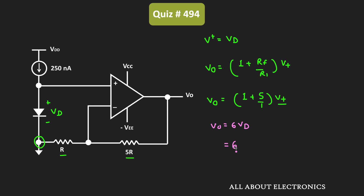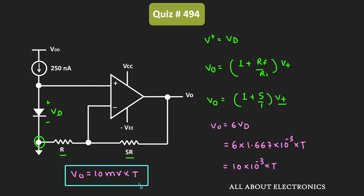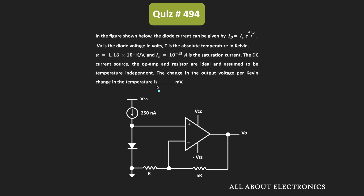And we know that Vd is equal to 1.667 times 10 to the power minus 3 times T. That is equal to 10 times 10 to the power minus 3 times T. Or we can say that Vout is equal to 10 millivolt times T. So from this expression, we can say that if the temperature changes by 1 Kelvin, then the output voltage will change by 10 millivolt. Therefore, for the given question, the answer is equal to 10 millivolt.